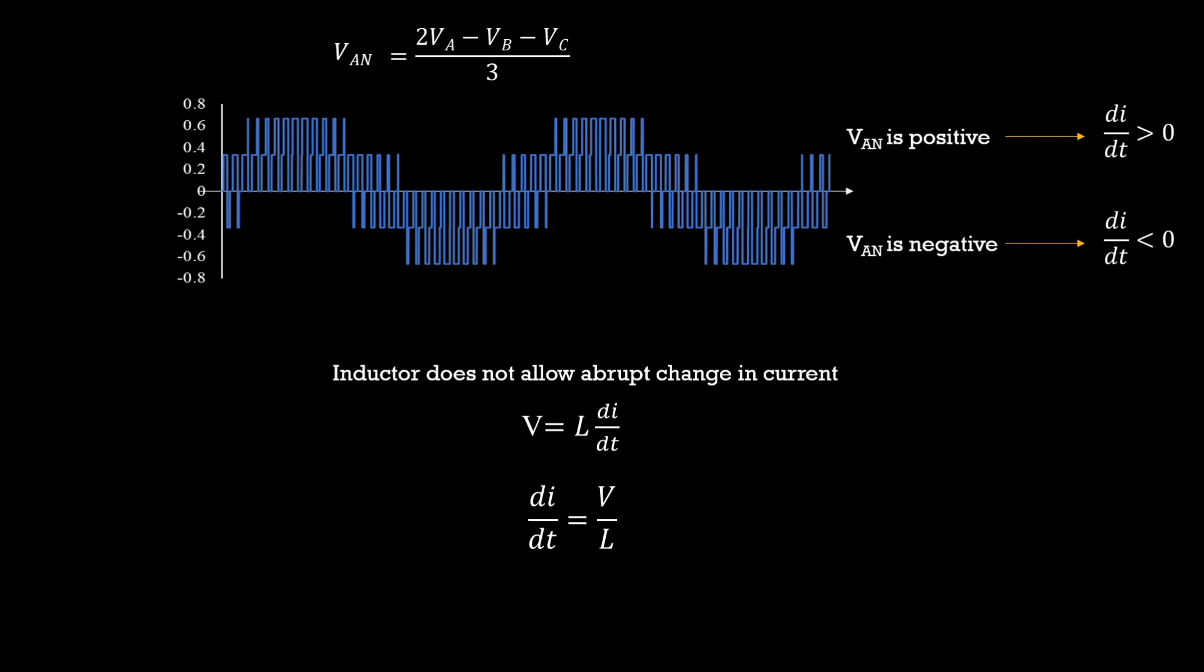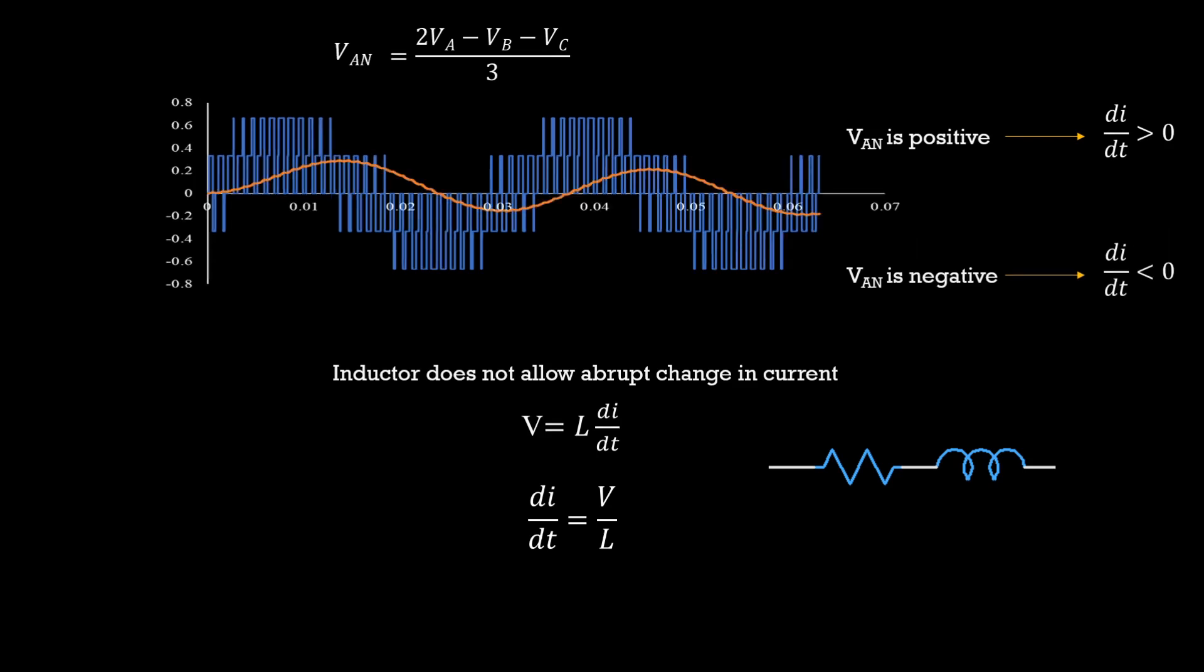What we can understand by this is when Van is positive, di/dt is positive and the current will rise and vice versa when Van is negative. But instead of just inductor, we also have the resistor that contributes to the current. Overall, the current waveform turns out to look something like this. Since the inductor did not allow abrupt change in currents, we get a sinusoidal current even though the voltage is a square wave.